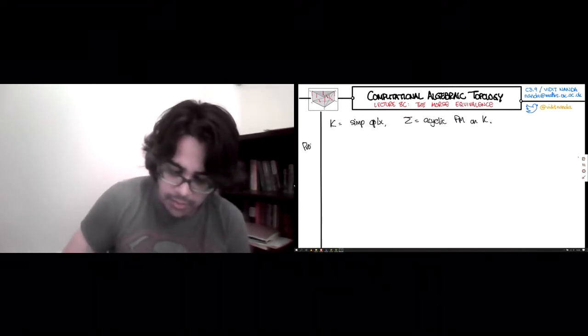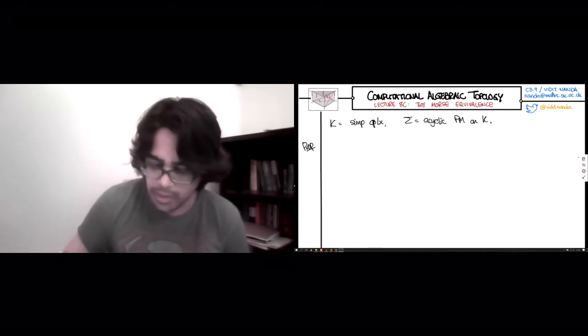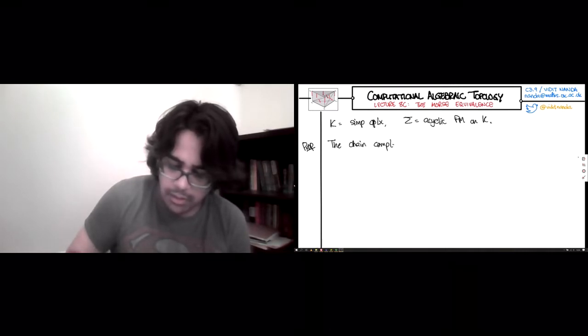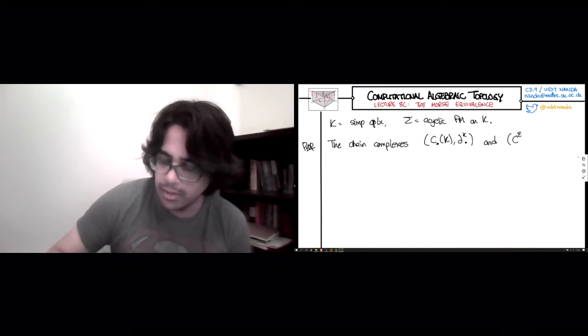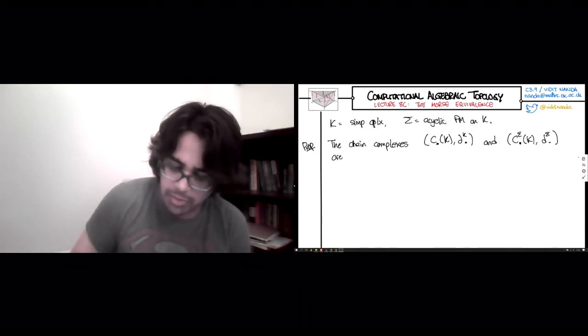And here is the result that we're going to focus on exclusively in this lecture. The chain complexes, the first one is the usual simplicial chain complex of K, and the second one is the Morse one, which we built in the previous lecture. So these two are chain homotopy equivalent.